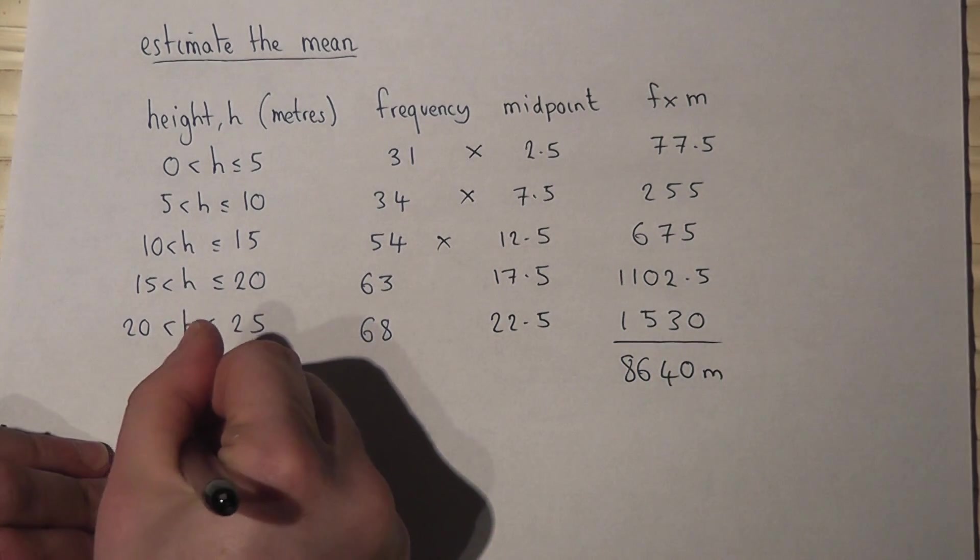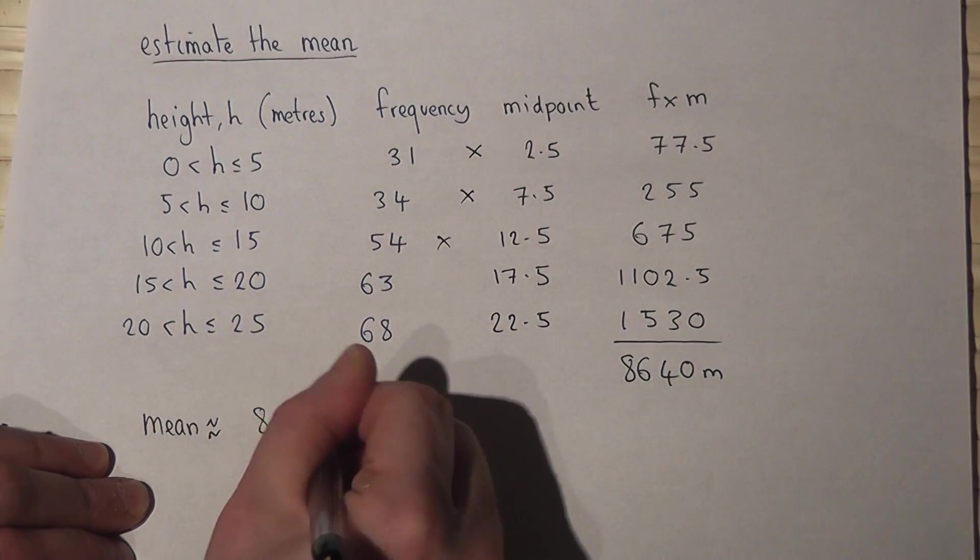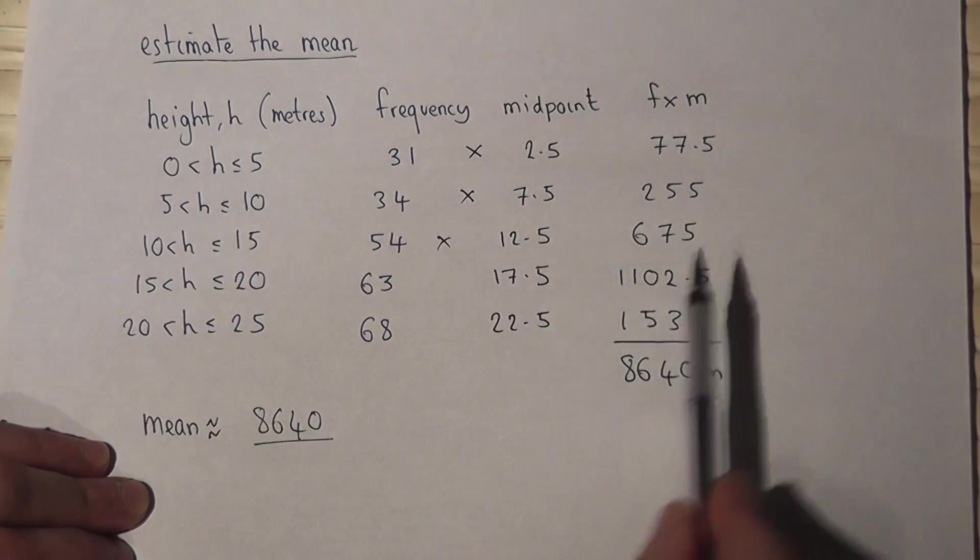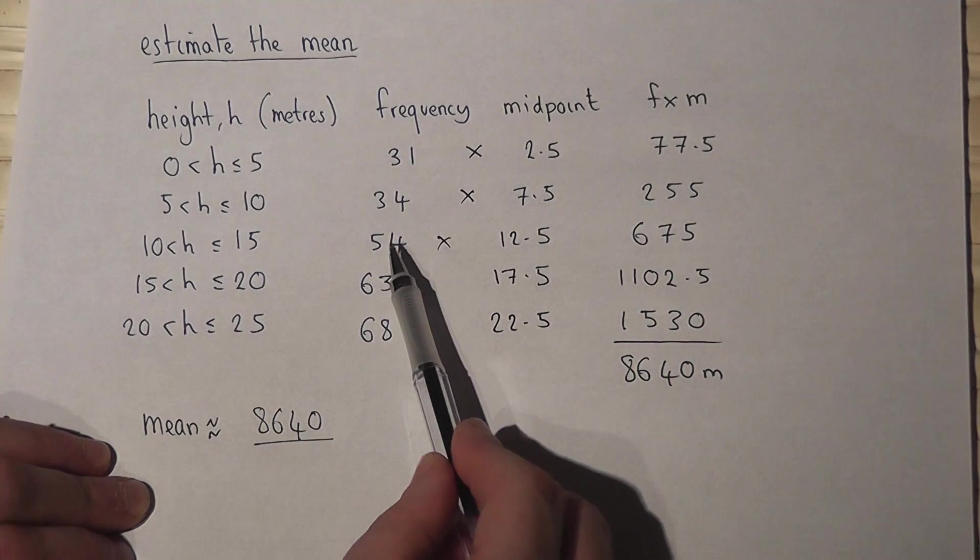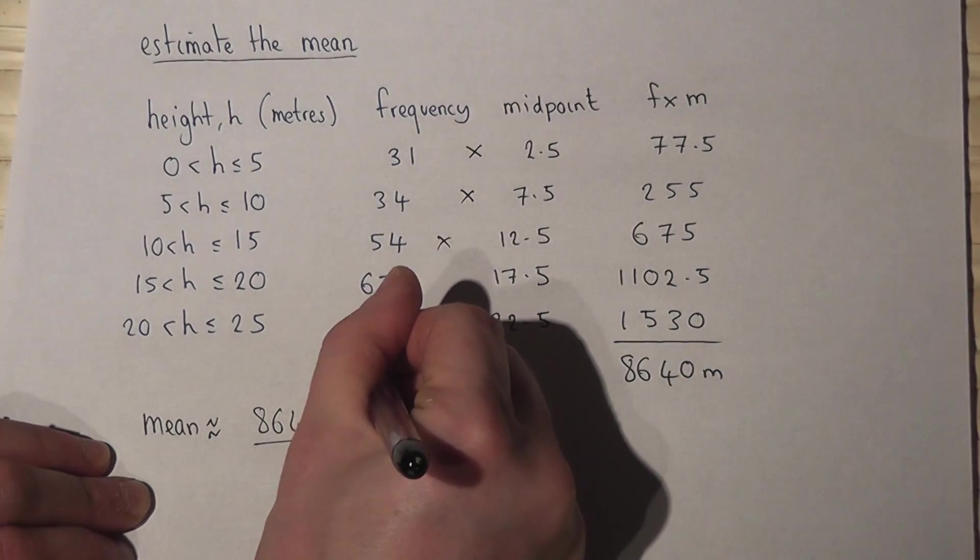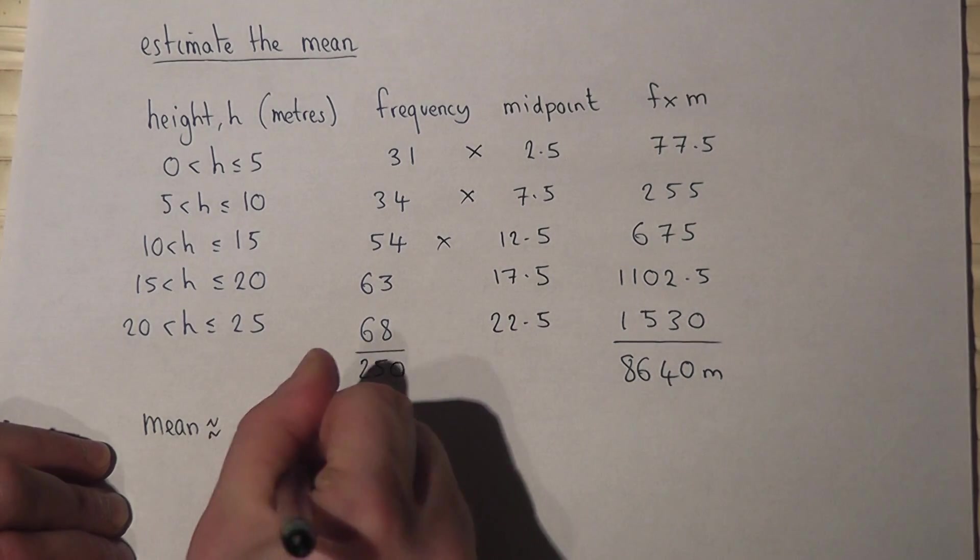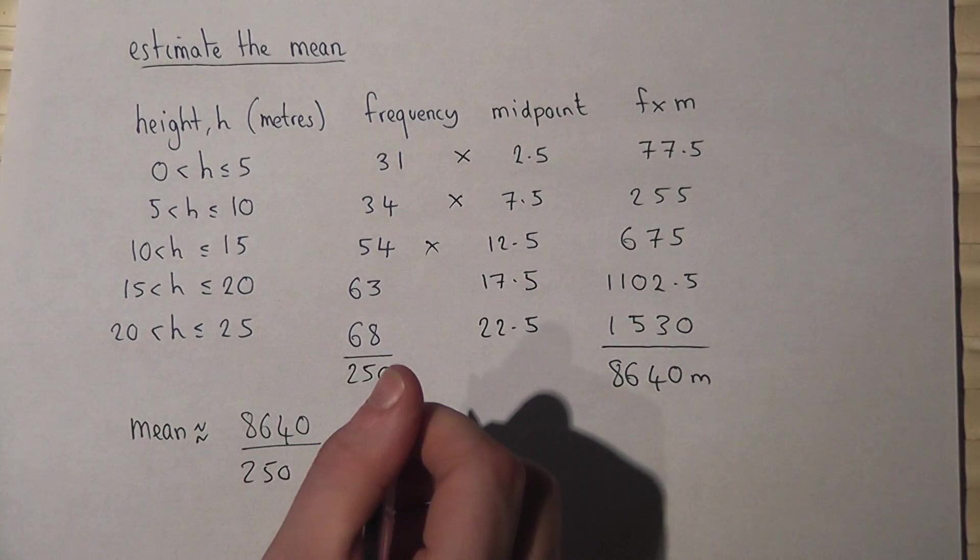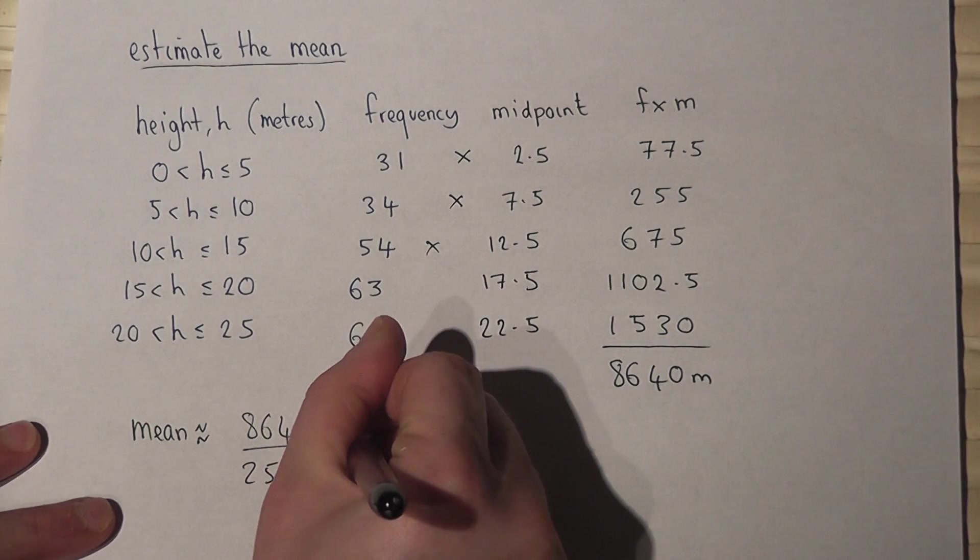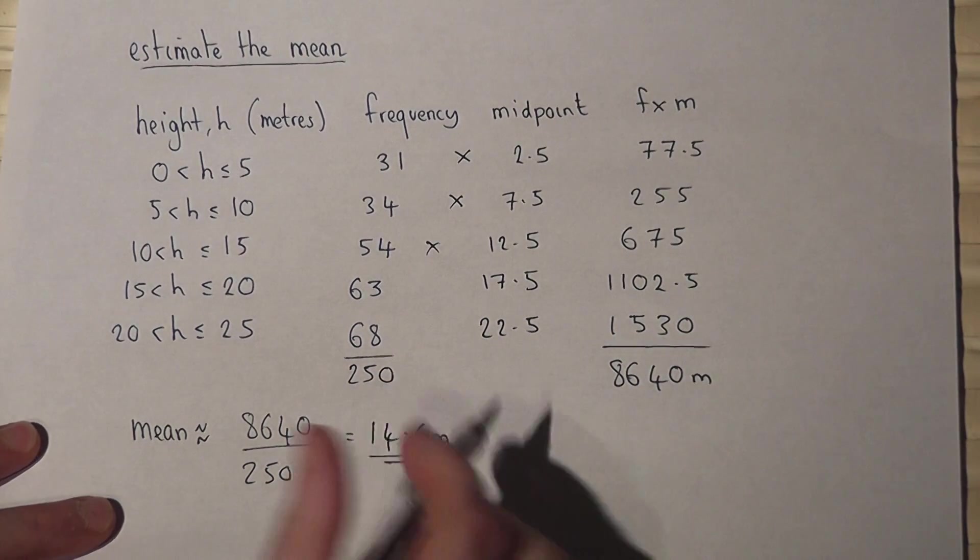The mean will be approximately 8,640 divided by the total number of trees. There are 31 trees, 34 trees, 54 trees, 63 trees, and 68 trees. If I add all these up, I get 250 trees in total. So I do 8,640 divided by 250, which works out at 14.6 metres as an estimate for the mean.